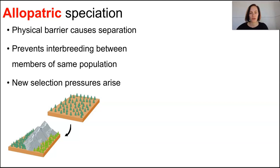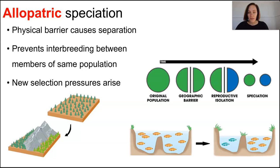With a physical barrier between the groups of the population, new selection pressures arise in that new environment, and genetic drift like the founder effect or a bottleneck effect can lead to divergence in the characteristics between these groups.